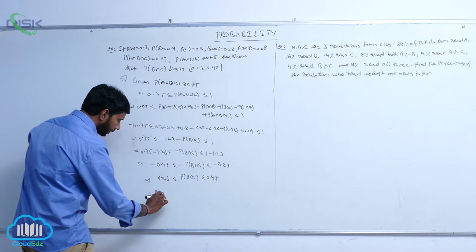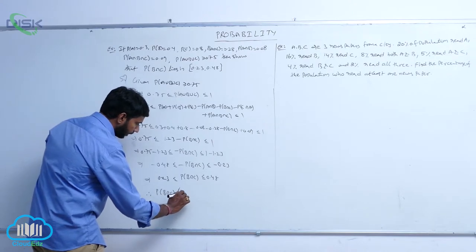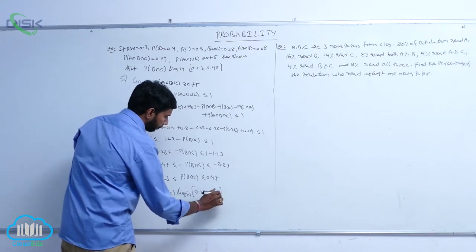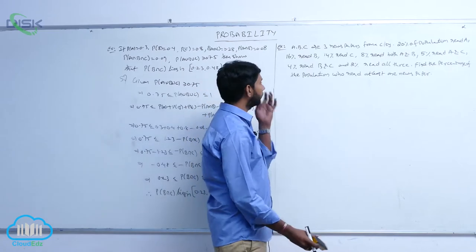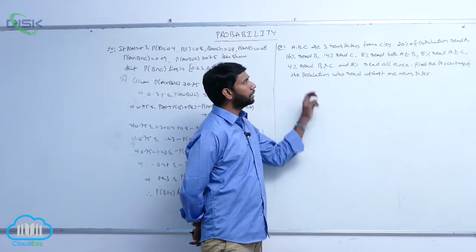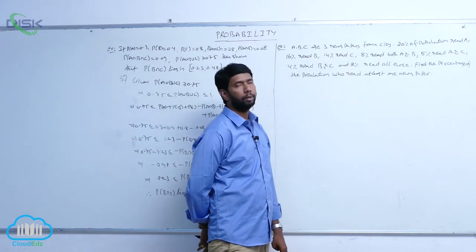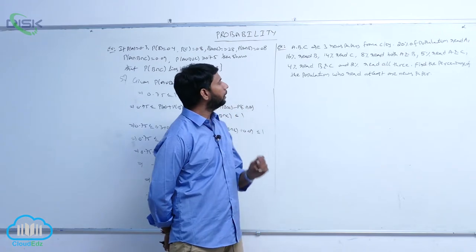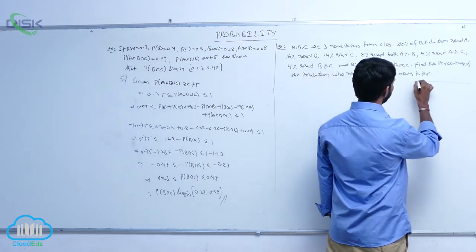Therefore, P(B∩C) lies in the closed interval [0.23, 0.48]. Next example: A, B, C are three newspapers from a city. 20% of the population read newspaper A, 16% read B, 14% read C, 8% read both A and B, 5% read A and C, 4% read B and C, and 3% read all three papers. Find the percentage who read at least one newspaper, and draw the Venn diagram.